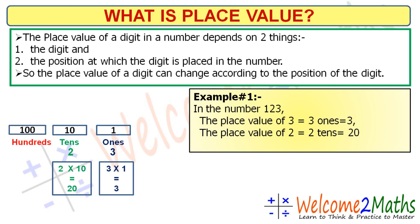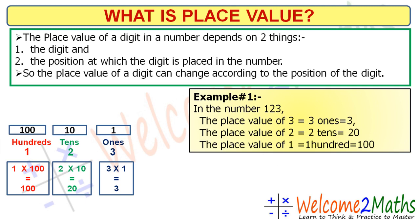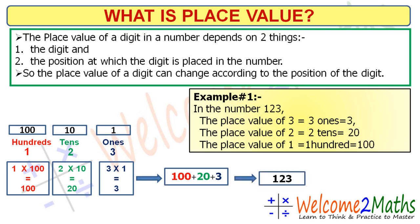1 is at the hundreds place, so the place value of 1 is 1 × 100 = 100. By adding the place values of the digits — 100 + 20 + 3 — we get the actual number, that is 123.